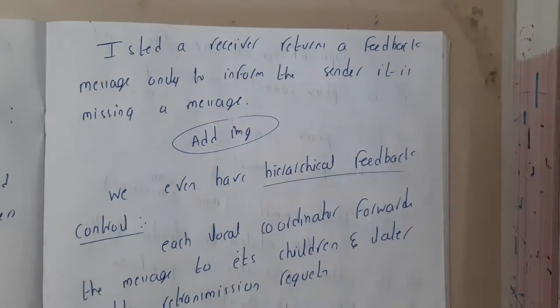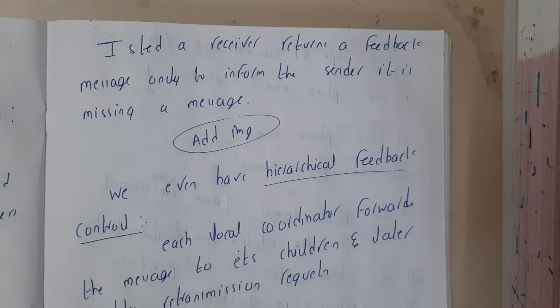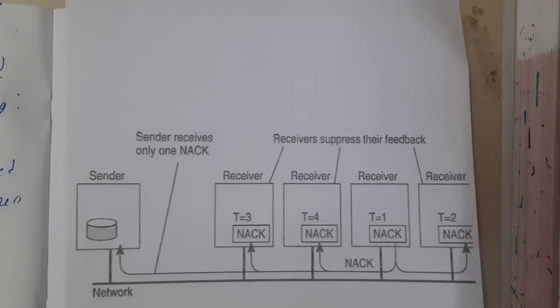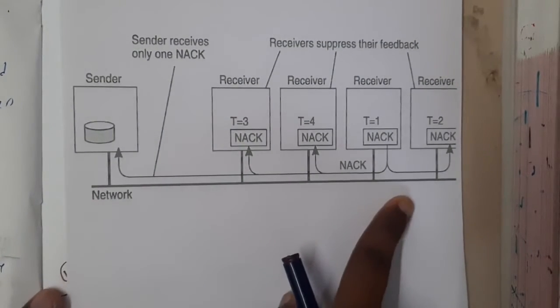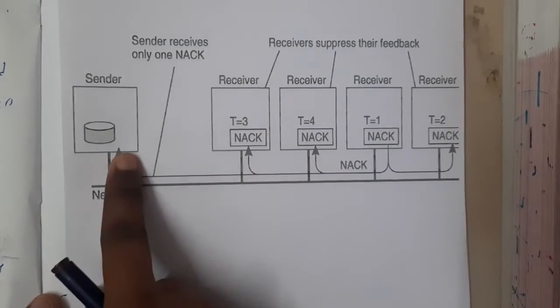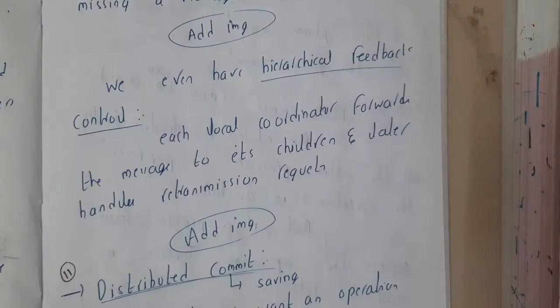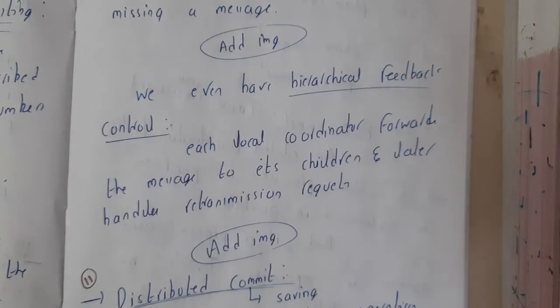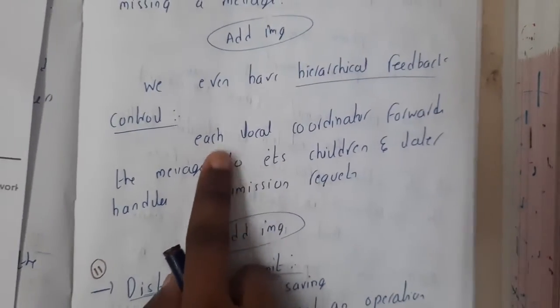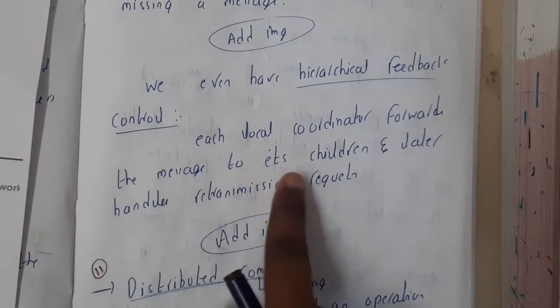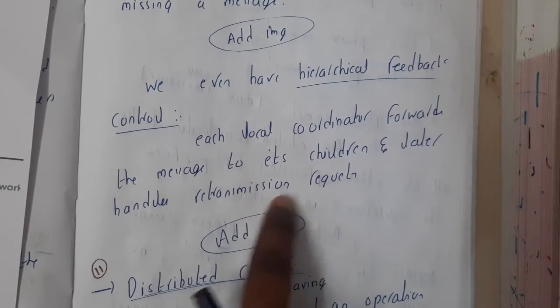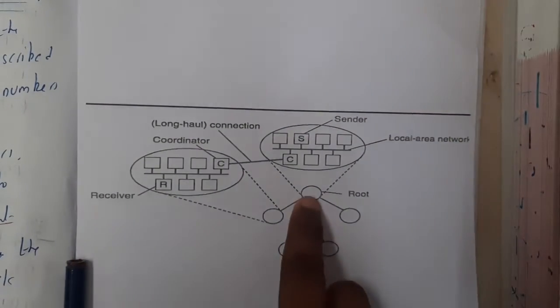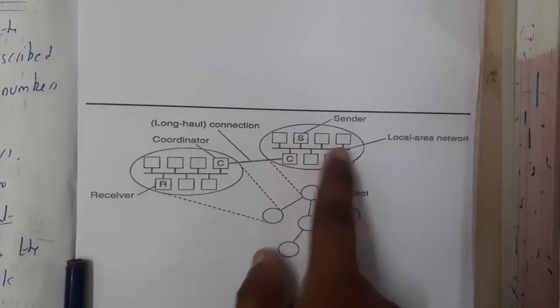To resolve this issue, we will be using the concept of hierarchical feedback. If you want to draw an example for this scalability, this could be an example. Here we got negative acknowledgements and all these acknowledgements are sent back. Using the hierarchical structure we can solve this issue. The concept is that each local coordinator forwards the message to its children and later handles the retransmission request. This is a small example you can take.